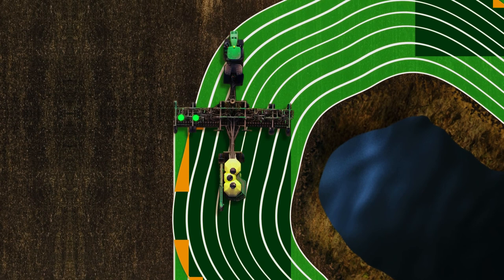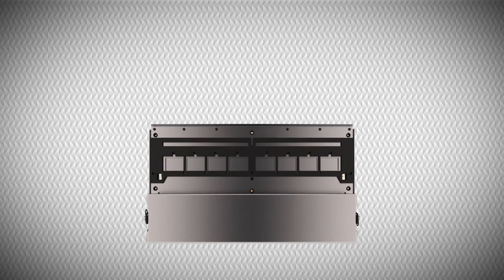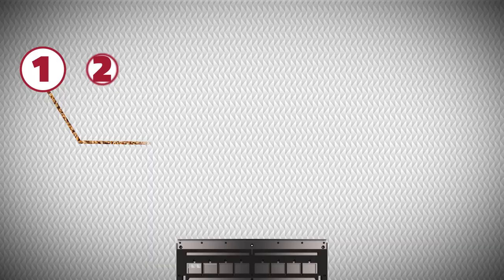This retrofit section control is an electric powered system that will open and close up to 8 sections per bin, controlling all the bins on your air cart.